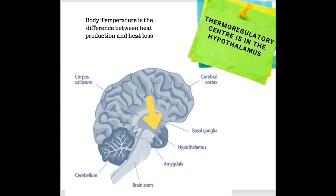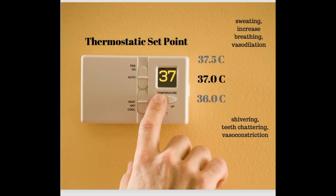Consider the thermoregulatory center in your brain to be very much like a thermostat. You set the temperature in your house, and as soon as it gets too low, the furnace kicks on — let's say at 36 degrees. Once the temperature reaches 36 degrees, the furnace kicks on to increase temperature. In our body, that looks like feeling cold, putting on blankets, starting to shiver, teeth chattering, and blood vessels constricting to bring all the heat back towards the core of the body.